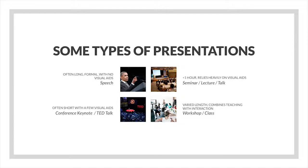Some types of oral presentations include speeches, which are often long and formal with no visual aids. You can also give a keynote or a TED talk — they're both very similar. TED talks tend to be anywhere between 5 and 20 minutes long, while a conference keynote can go anywhere from 30 minutes to an hour. Those often have very few visual aids. At a TED talk there may be slides in the background, but the presenter always faces the audience and rarely references the slides.